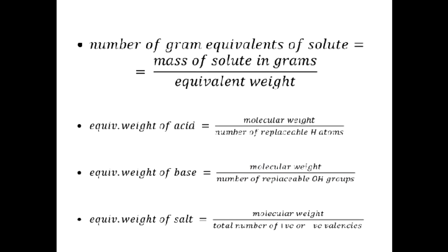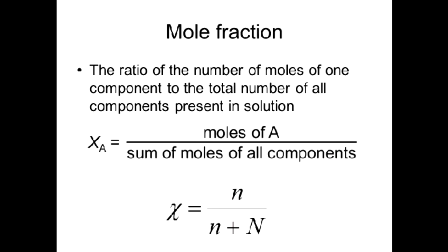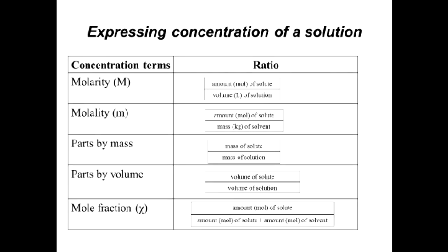To calculate the number of gram equivalents, divide the mass of solute by the equivalent weight. Equivalent weight should be calculated differently for acids, bases, and salts. Molality shows the number of moles of solute dissolved in one kilogram of solvent, with units of mol per kg. Mole fraction shows the number of moles of solute relative to the total number of moles in solution. This table collects all these concentration expressions for review.